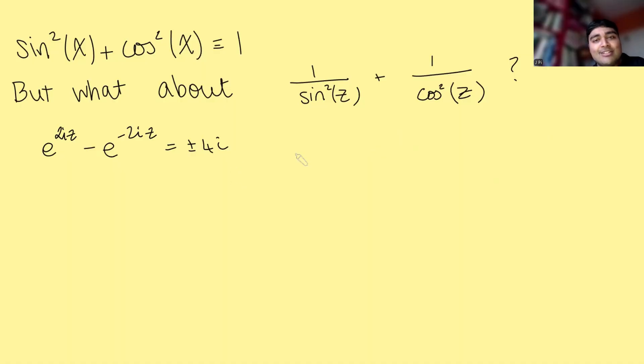So we're going to do a little substitution here. We're going to say U is going to be e to the 2iz. If I substitute that into this, this is just U. E to the minus 2iz, that's just going to be 1 over U, and this is plus or minus 4i. Let's multiply through by U everywhere. So I get U squared minus 1 is plus or minus 4ui, and bring that 4ui onto the left side. So I get U squared minus or plus 4iu minus 1 equals 0.